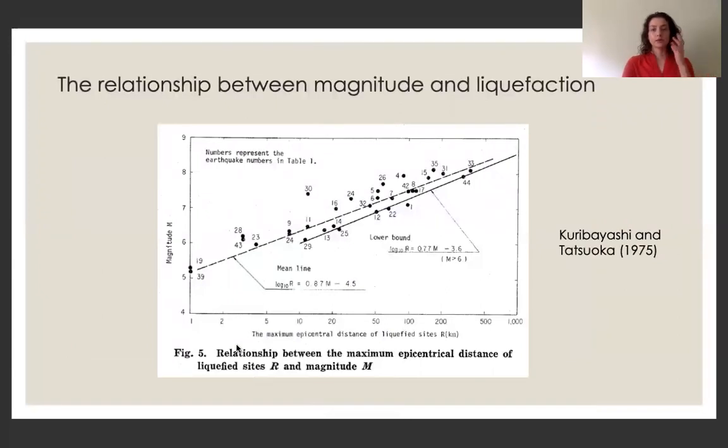So if you look at the bigger picture for a second, we can see that actually there is a positive linear relationship that has been derived between magnitude and epicentral distance of liquefied sites. And in this case, this was a study for Japan. So in some examples up to magnitude eight earthquakes, we can see liquefaction was generated at sites close to 200 kilometers away from the epicenter.